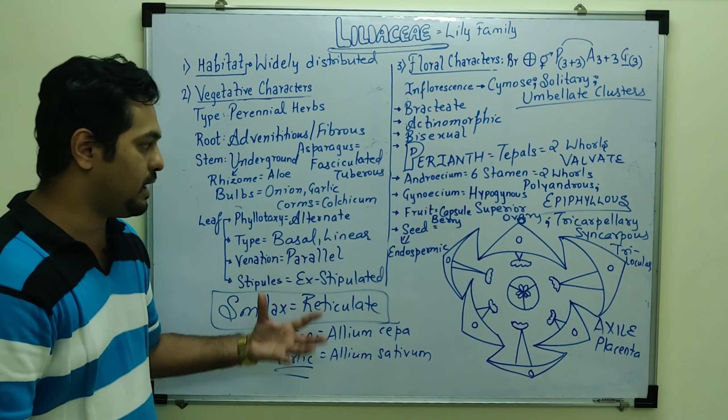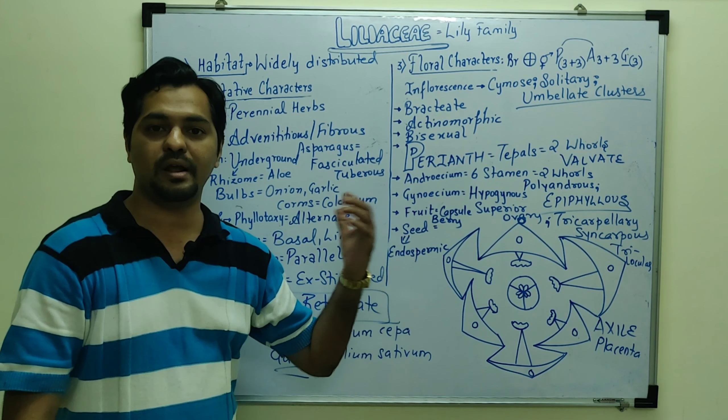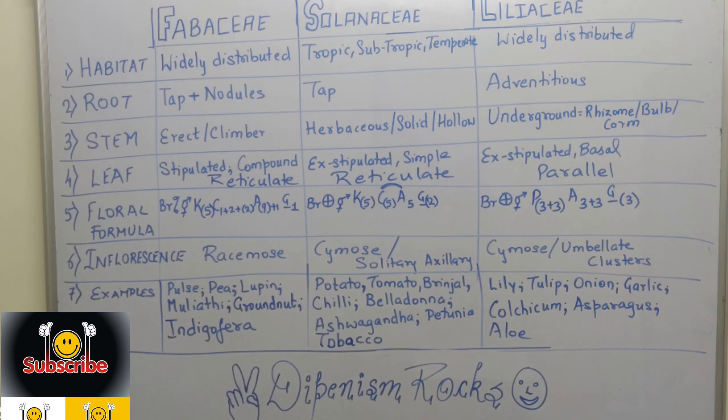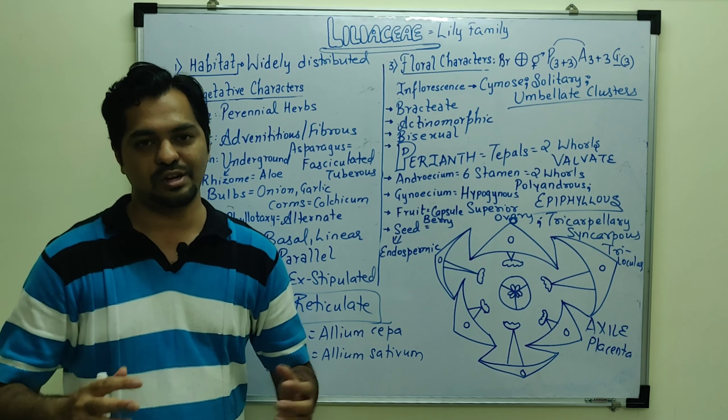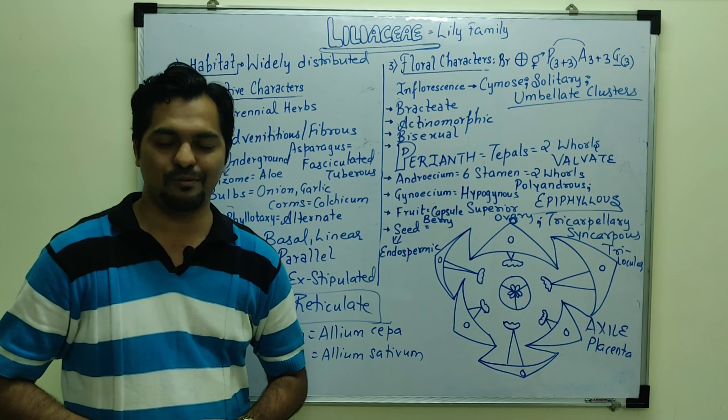So in detail we discussed Fabaceae, Solanaceae, and Liliaceae. So you can make a distinguishing table. I wanted to discuss about all the plant families. Stay tuned for my further videos. That is all from Dipenism.